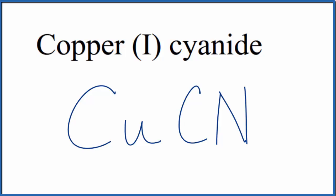So this is the formula for copper one cyanide: C-U-C-N.